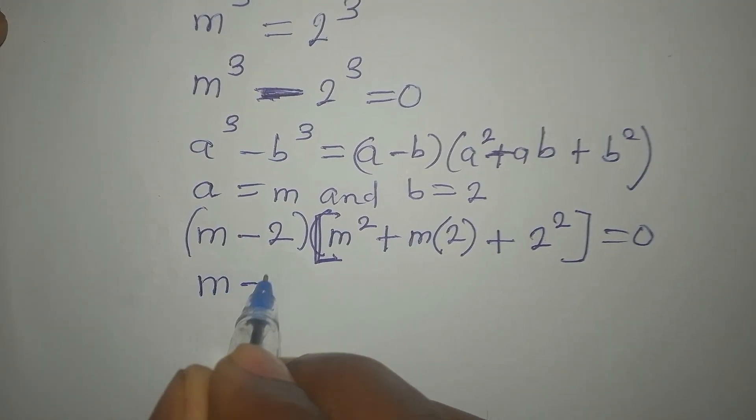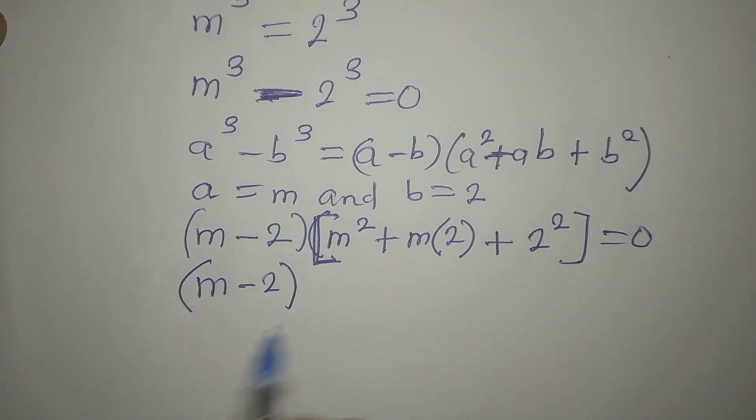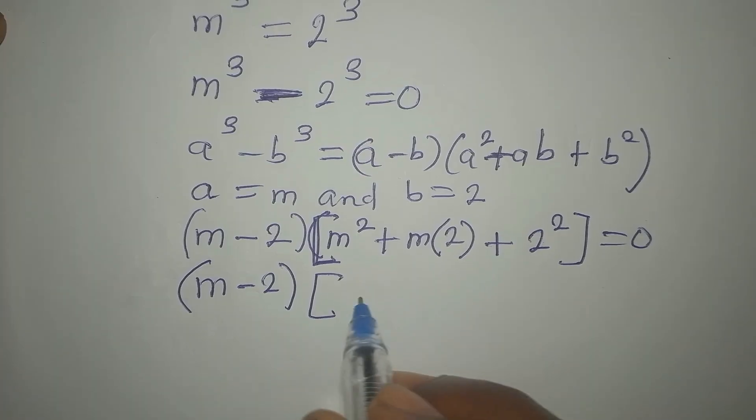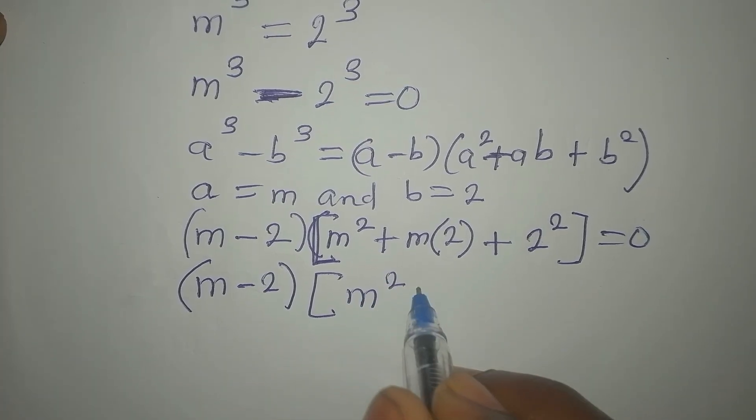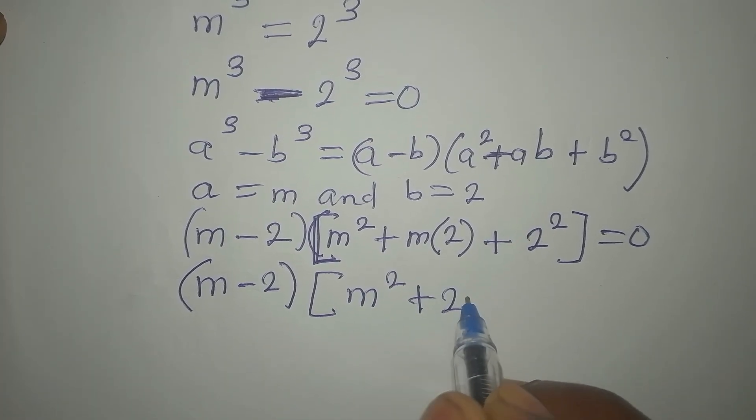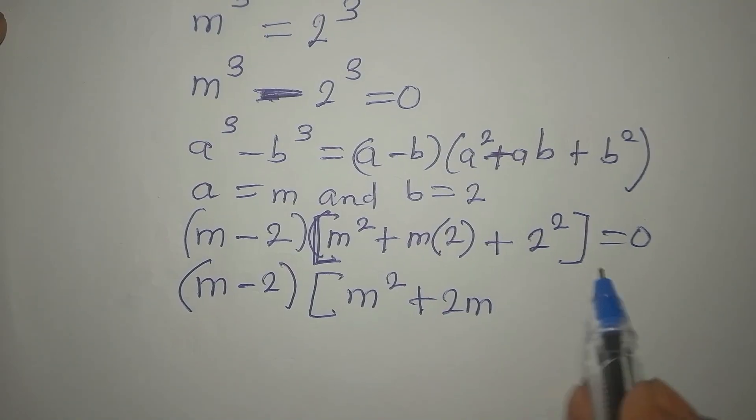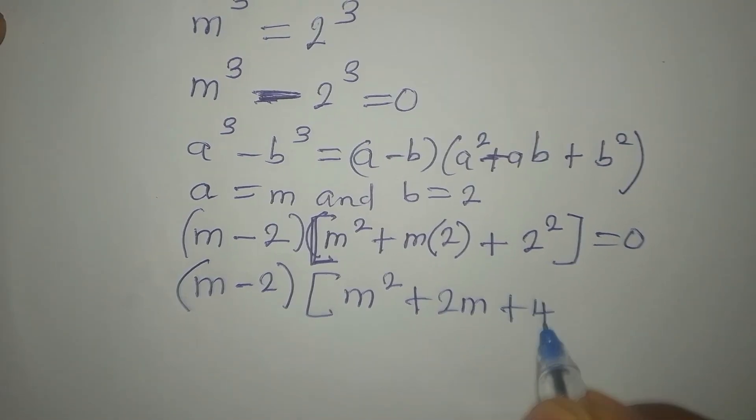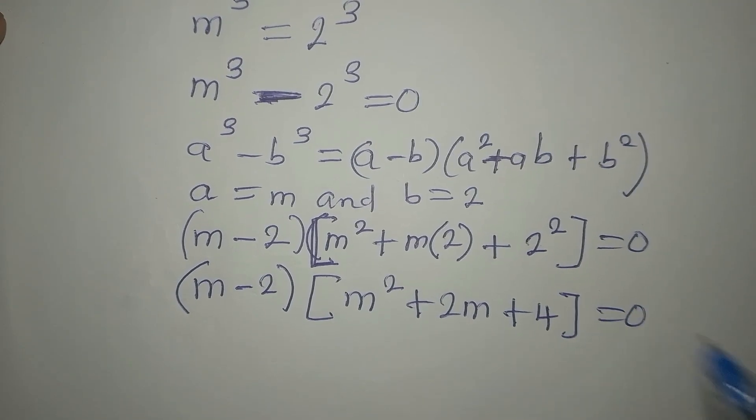m minus 2 is a factor. Then from here, we have m squared plus 2m. That is m times 2. Then plus 4. Everything is equal to 0.